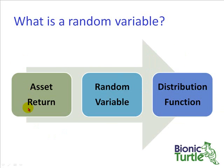So to recap, that basic process is we want to understand something like an asset return, we describe it with a random variable, we characterize the random variable with a distribution function.